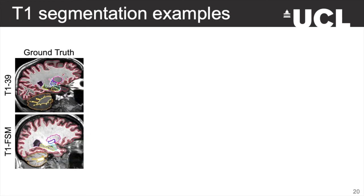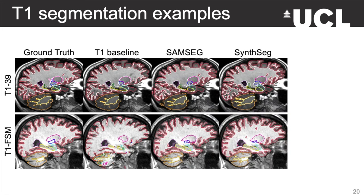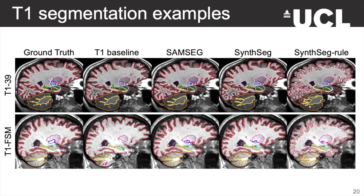Let us now look at some segmentation examples, starting with two T1 scans. We show the ground truth for comparison. We see that the T1 baseline does really well on images similar to its training data, but quickly degrades on images of slightly different intensity distribution — particularly observed for the cerebellum and deeper structures like the pallidum, which is inexistent in one segmentation. SynthSeg and SAMSEG produce quite similar and overall quite good segmentations, even if there are some mistakes here and there. SynthSeg-rule outputs segmentations of lower quality, especially for outer structures and the cortex, which has little contrast. Interestingly, SynthSeg doesn't make the same mistakes because its training examples sometimes yield very little contrast from random intensity sampling — so SynthSeg is already accustomed to segmenting data presenting little or no contrast.